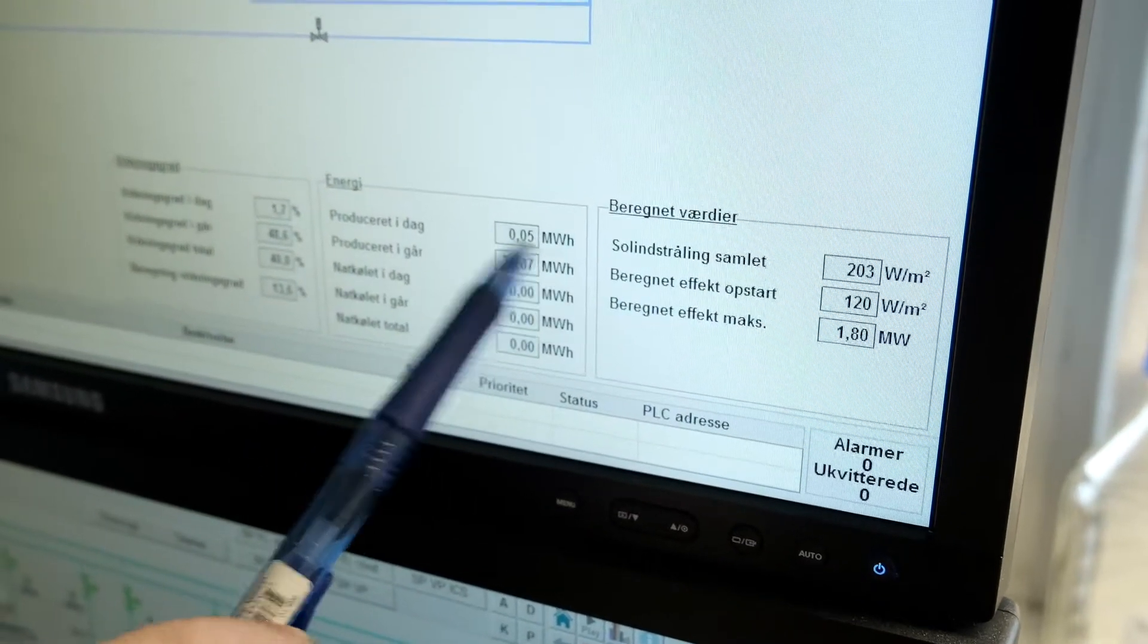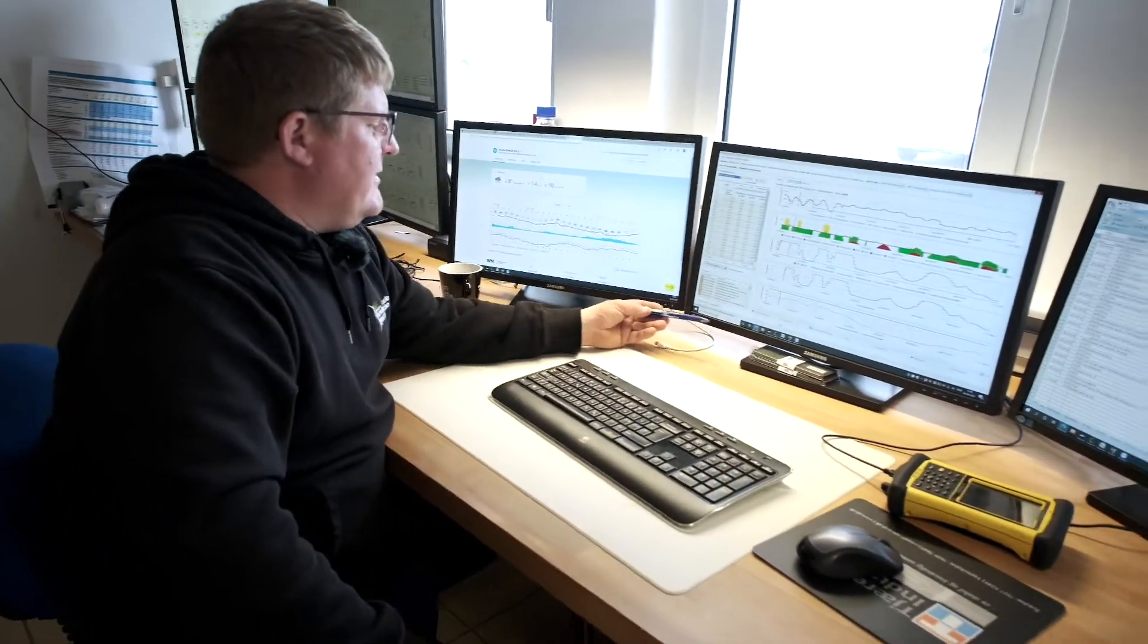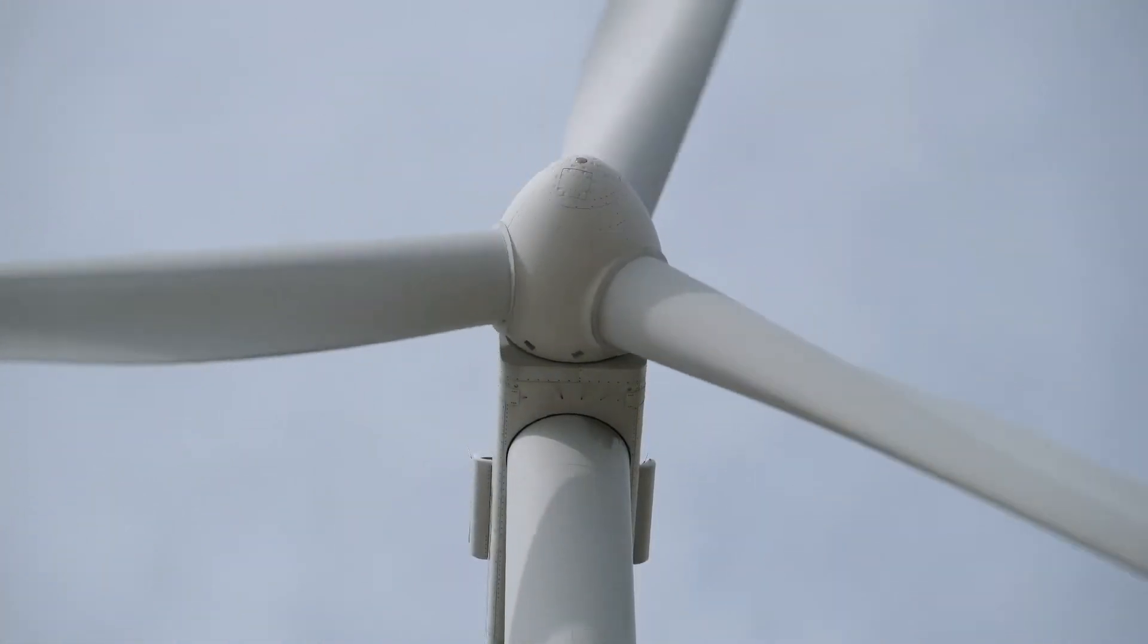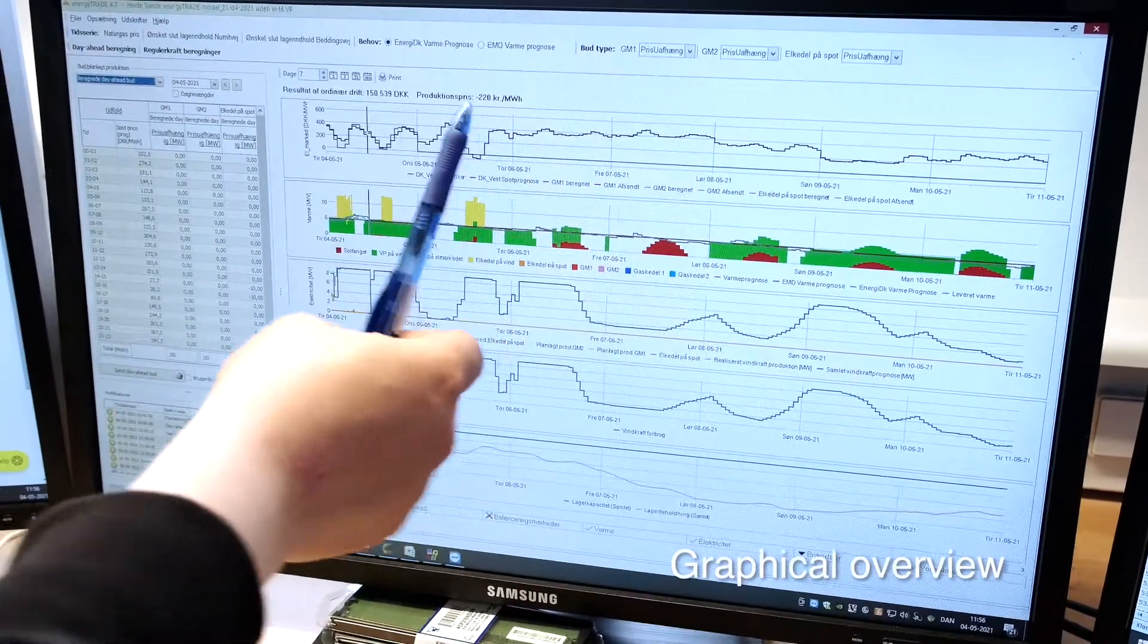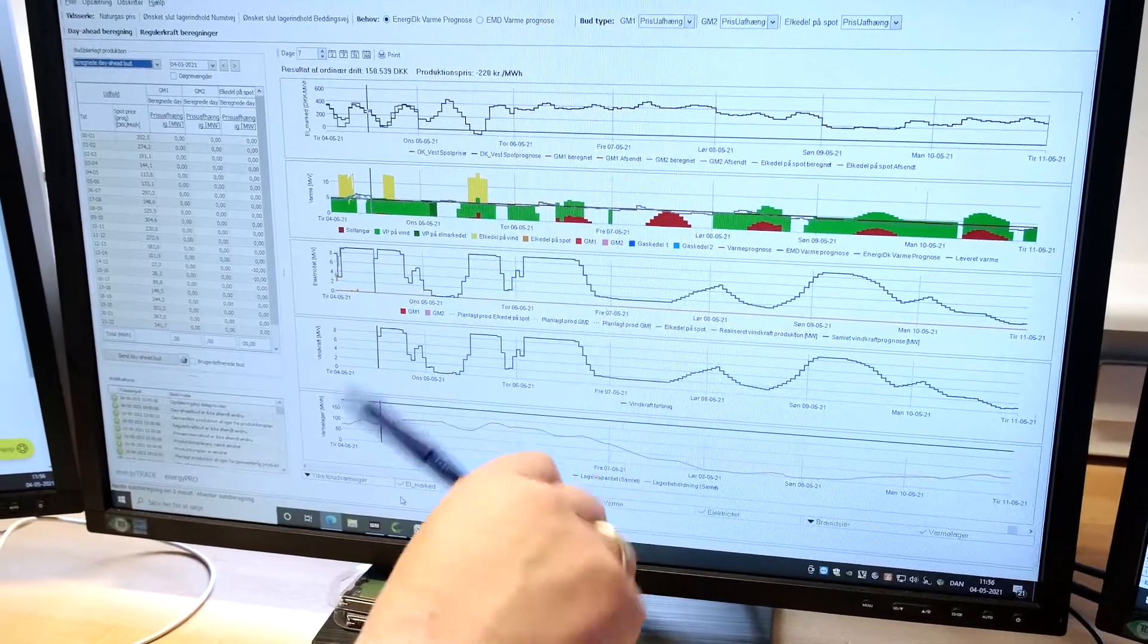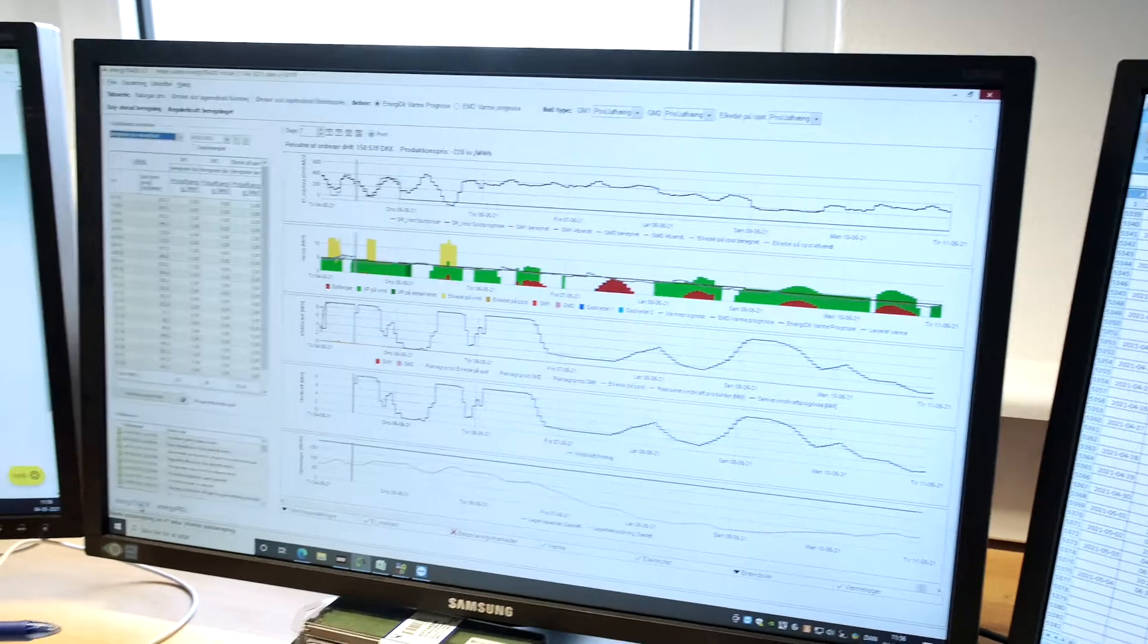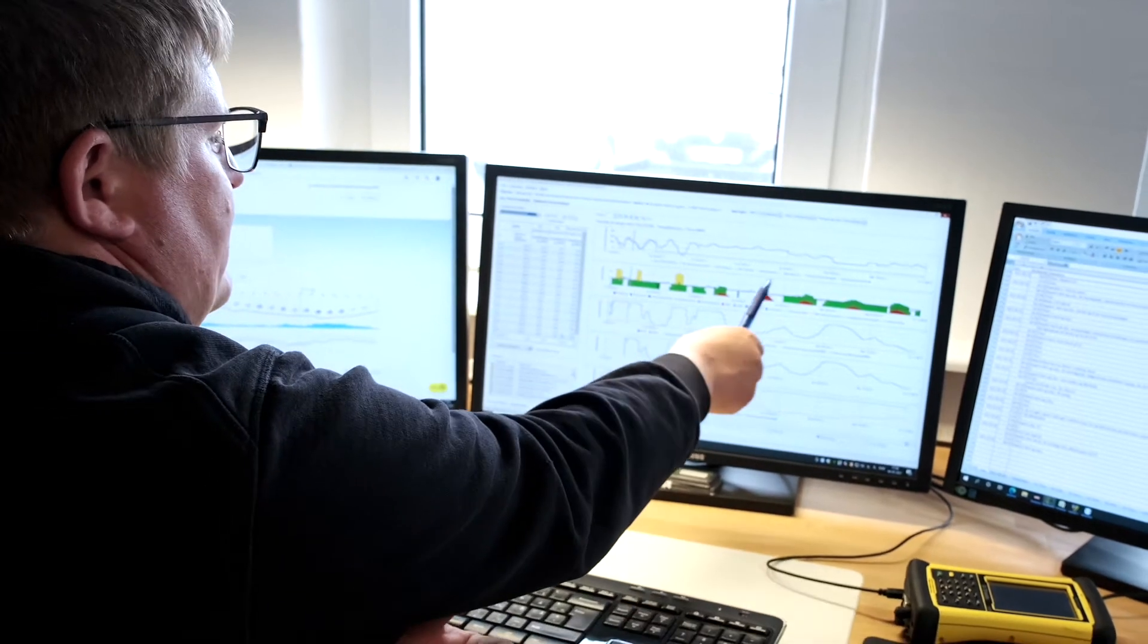The way we do it is we're looking into the energy trade software that has been developed by EMD in Aalborg. As you can see, we are following the prognosis of the spot market, the electrical price hour by hour. Then we're looking at how much wind there is, which is converted into electrical power, and how much solar production we have. The energy trade module uses this model to figure out what is best for us and how we are producing the cheapest heat seven days ahead.